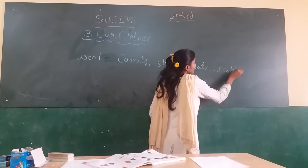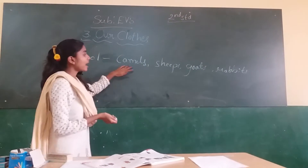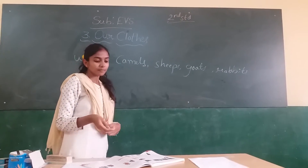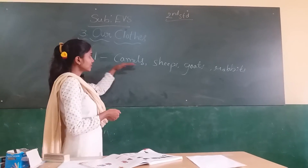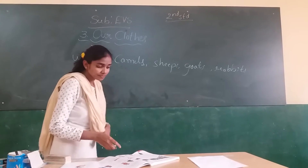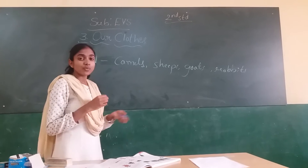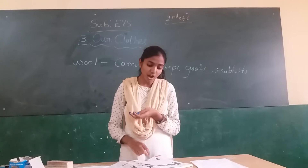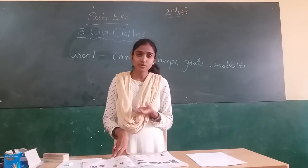We get wool from camels, sheep, goats, and rabbits. Then we make woolen clothes using these animals' wool — clothes such as sweaters, scarves, socks, caps, and coats.